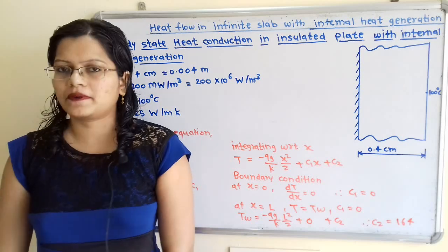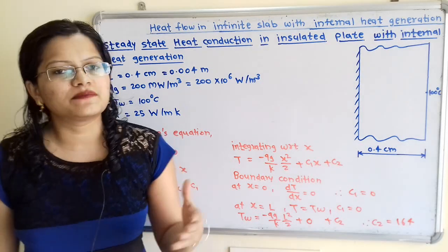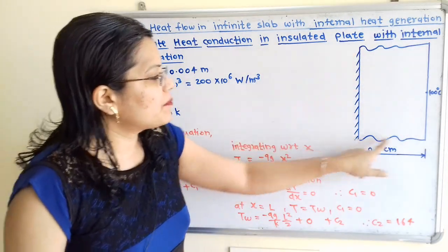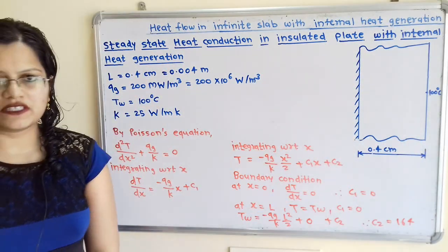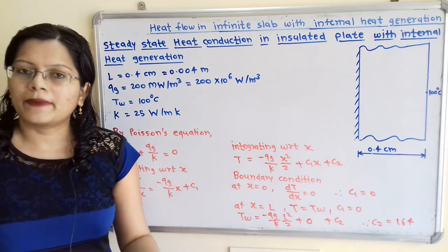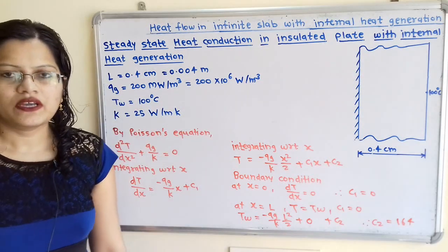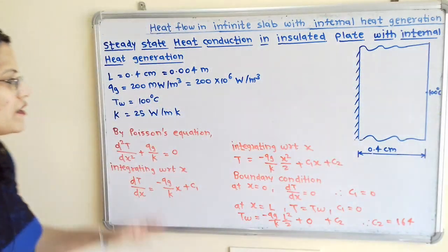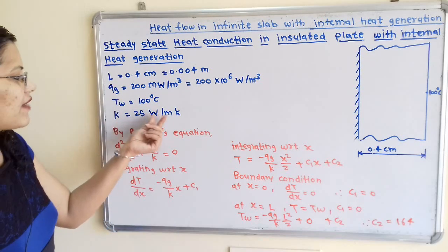We will first draw the diagram as per the given data. Thickness L is given as 0.4 cm, but the standard unit is meter, which is equal to 0.004 meter. We draw one plate which has one side insulated and thickness equal to 0.4 cm. Heat generated is 200 MW per meter cube, but in standard units that is 200 into 10 raised to 6 Watt per meter cube. The temperature on the other side of the plate is TW equal to 100 degree Celsius, and thermal conductivity K is equal to 25 Watt per meter Kelvin.